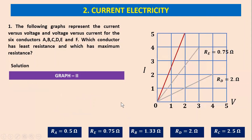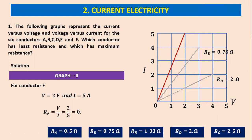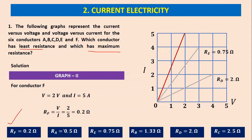The last curve — that straight line meets a point (2, 5) in the current versus voltage graph. The voltage is 2 volts and the corresponding current will be 5 amperes. Its resistance is V by I, which is 2 by 5, equal to 0.2 ohms. So R_F equals 0.2 ohms. R_F is the least resistance at 0.2 ohms, and R_C is the maximum resistance at 2.5 ohms.